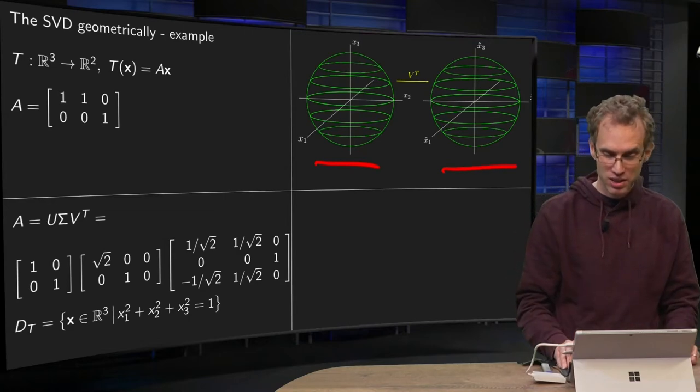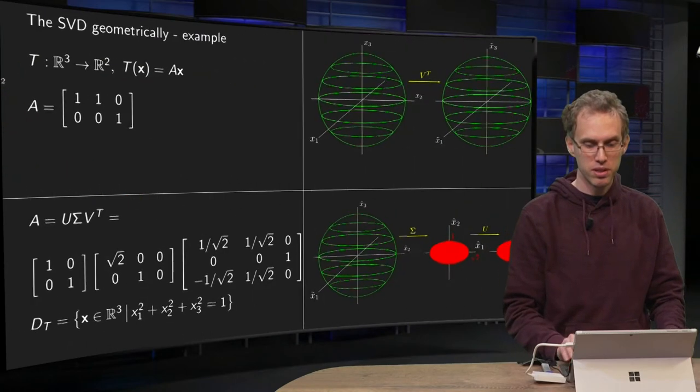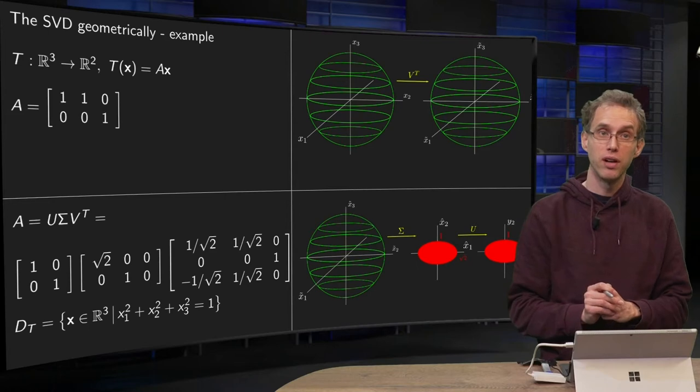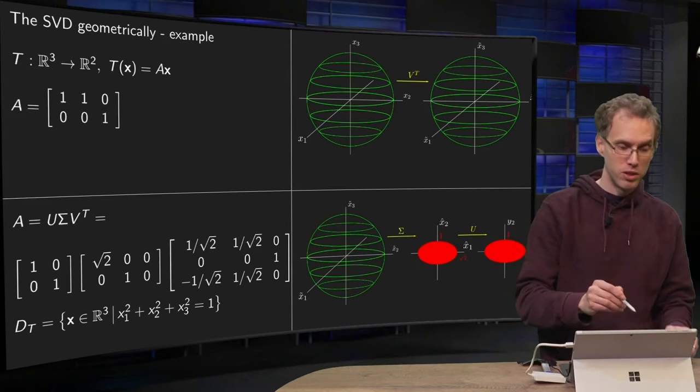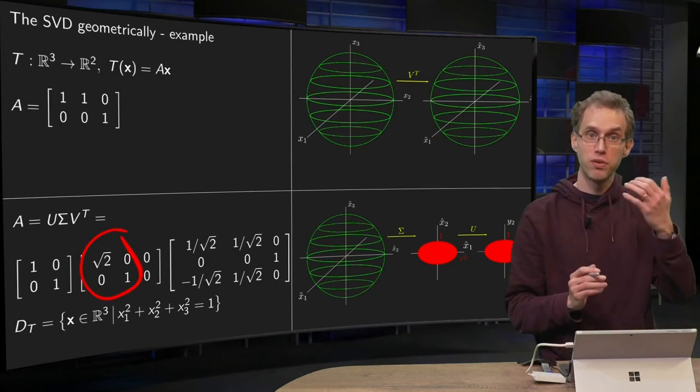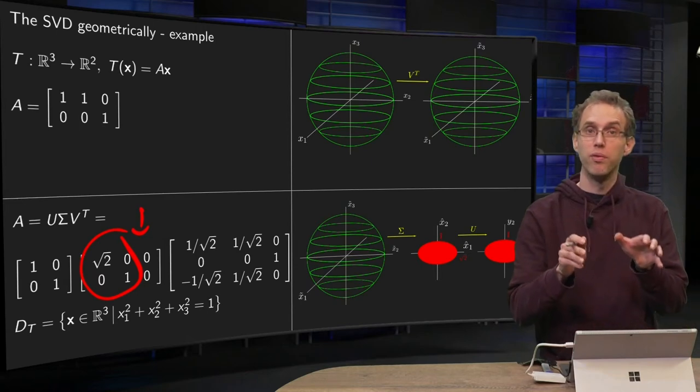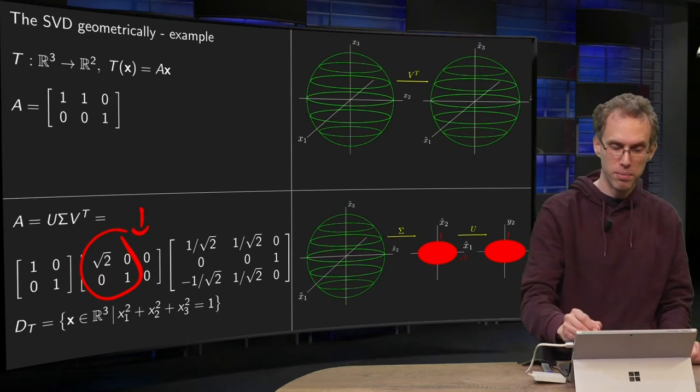Then, next, our matrix Σ is coming. So what is the matrix Σ doing with our unit sphere? Now we see that we will map to an ellipse with semi-major axes √2 and 1, and due to those zeros here we will map to the interior of the ellipse.